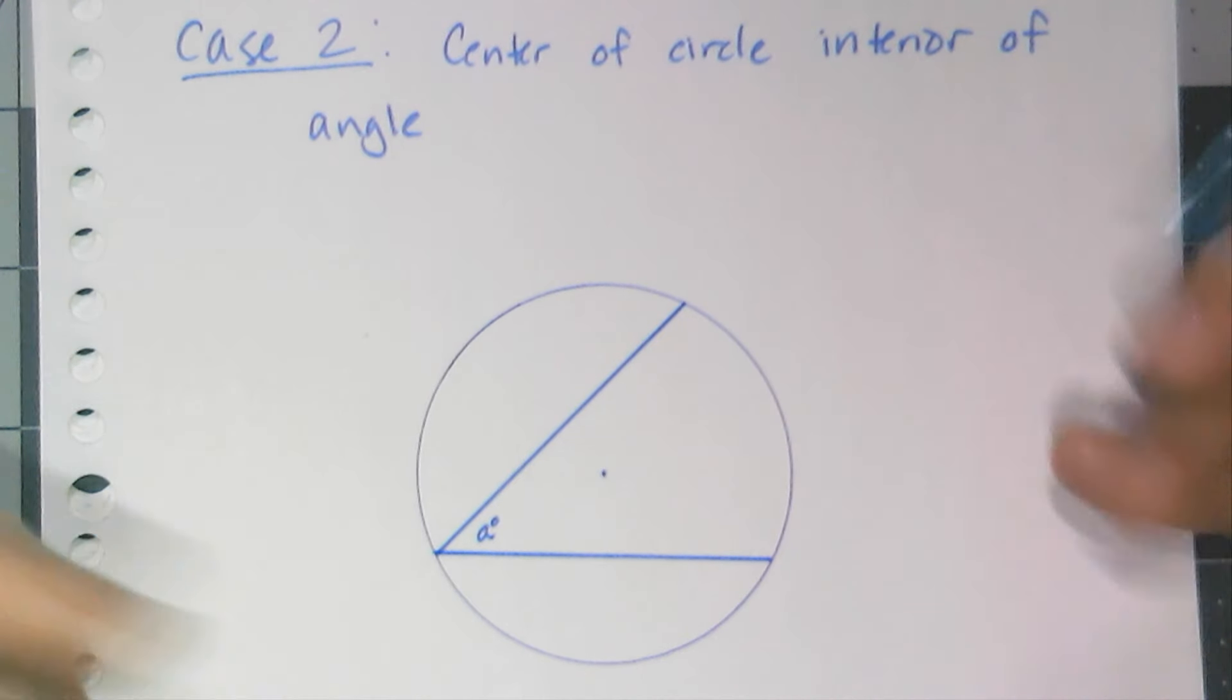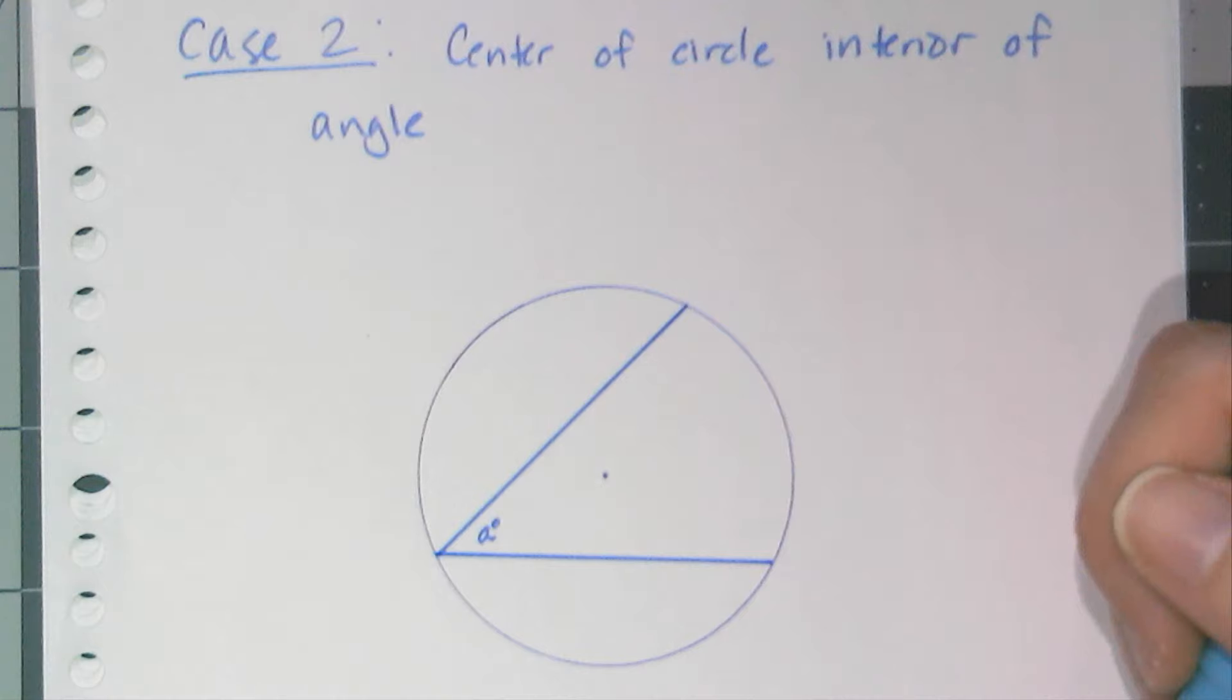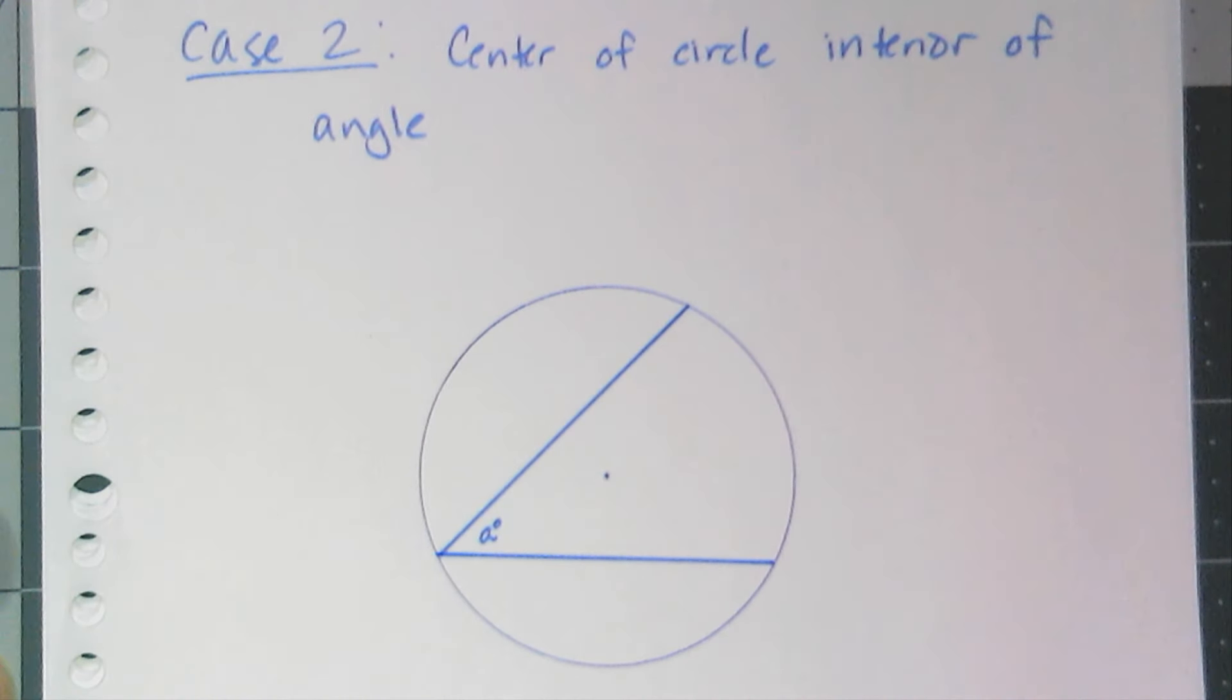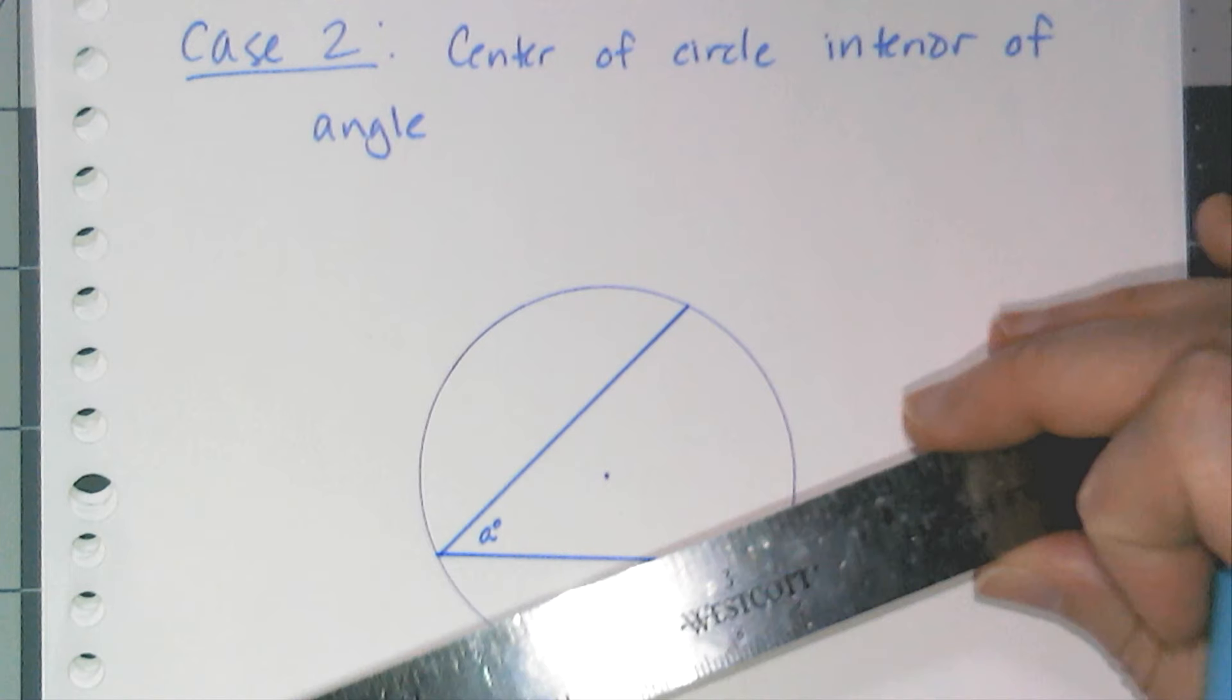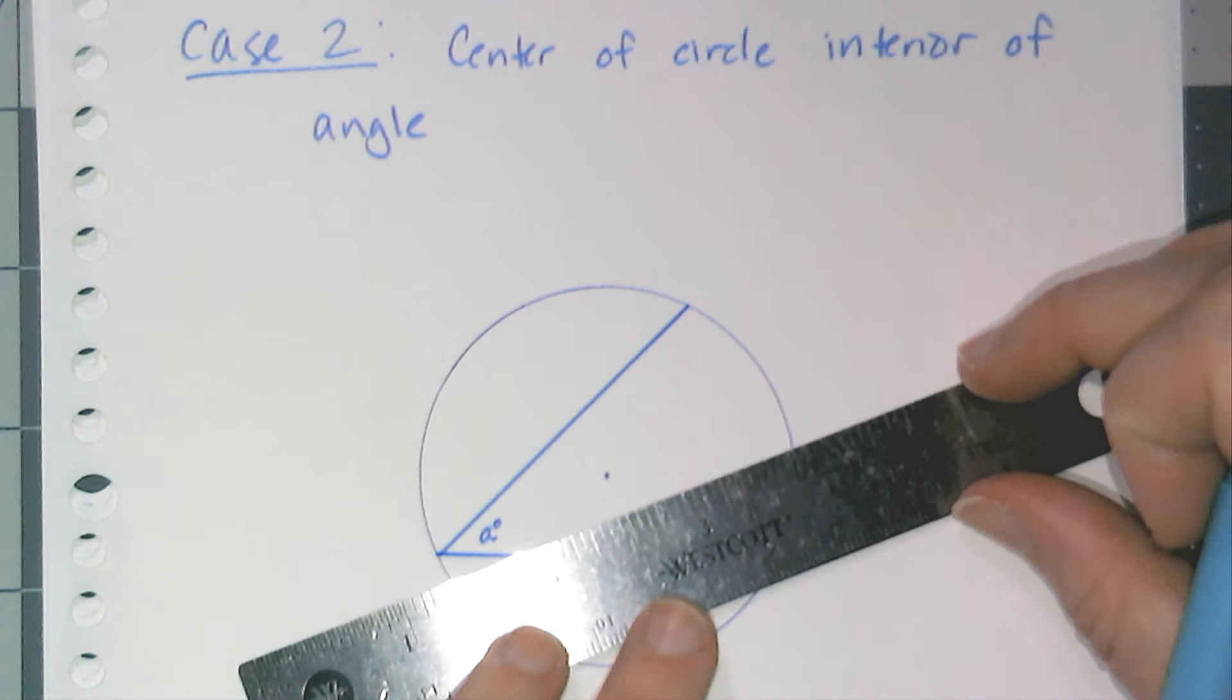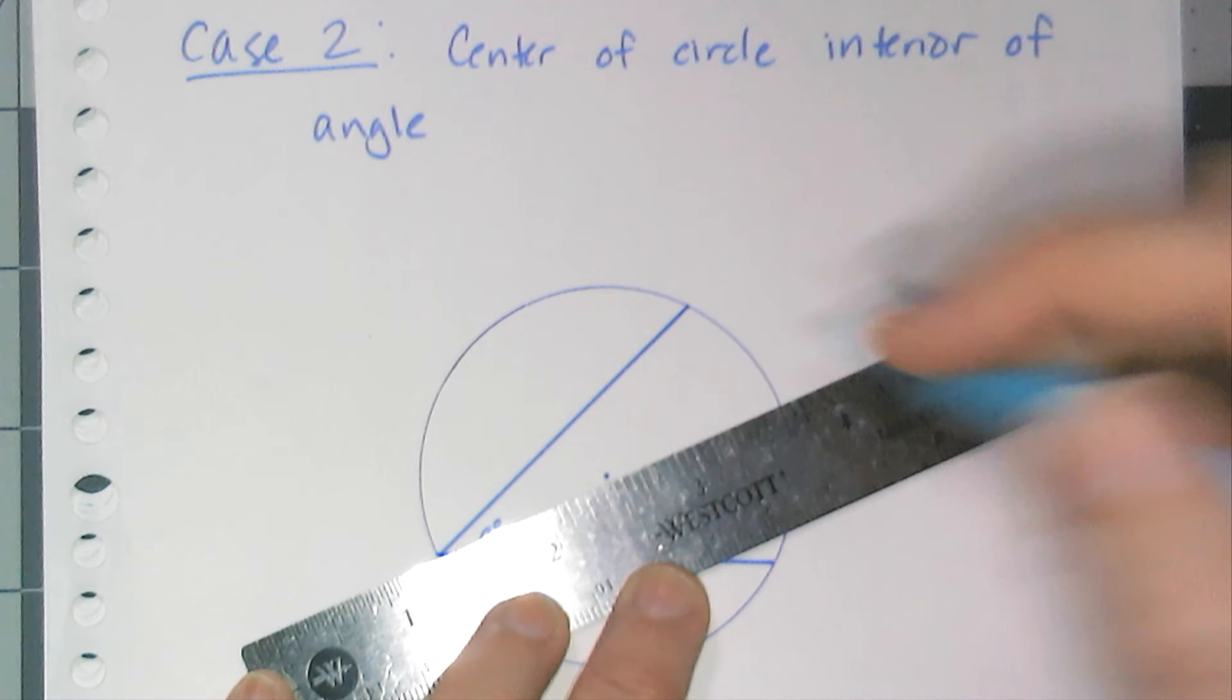well, case two can be, well, when the center of the circle is on the interior of the angle. And I'm like, well, how do I prove this? Well, actually quite simply. Because I know how to prove things with intercepted, or inscribed angles with intercepted arcs, when I have case one, when the diameter is there, right? As one of the sides of the angle. So why not just add a diameter in?